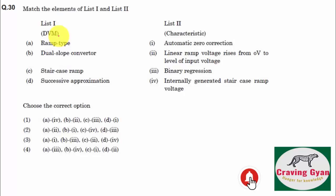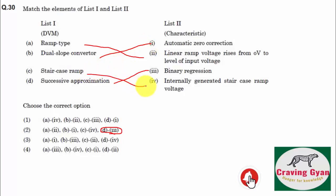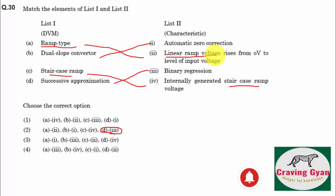Thirtieth question — match the following digital voltmeters to their characteristics. Successive approximation corresponds to binary search or binary regression. Dual slope or ramp type corresponds to linear search, so D maps to 3. The ramp type corresponds to linear ramp voltage rising from 0 volts to the input voltage level. Dual slope converter corresponds to automatic zero correction. Staircase type corresponds to internally generated staircase ramp voltage. Links for A-to-D and D-to-A converters are given in the description.